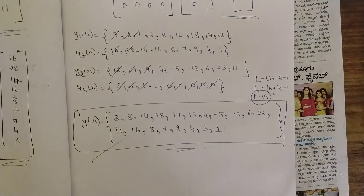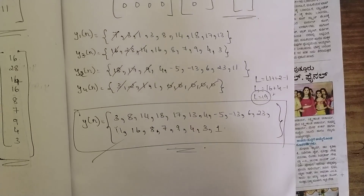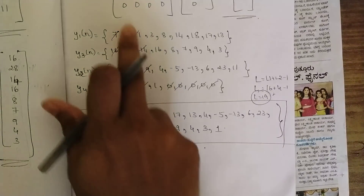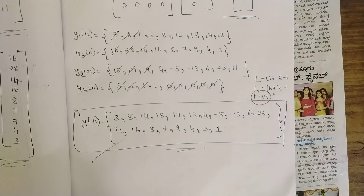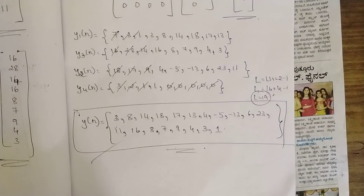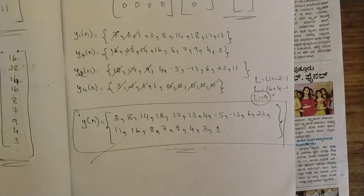That's all for this session. We have solved two problems in two sessions for overlap save to help you understand this method thoroughly. In the next session we will discuss the overlap add method, which is still easier than overlap save with slight differences in the last steps. Like and share this video, stay updated to our channel, and please watch our Digital Signal Processing videos. Thank you.